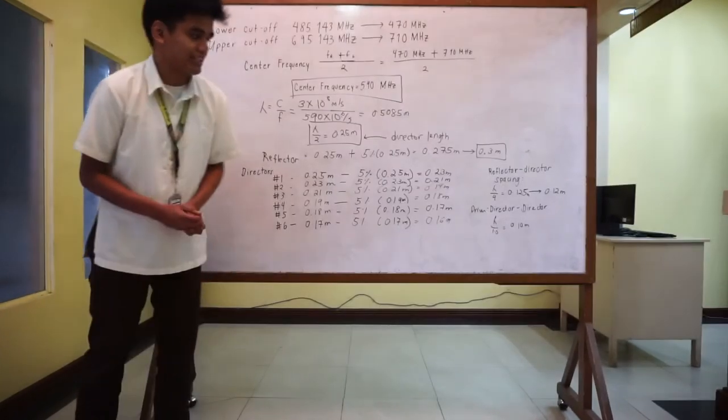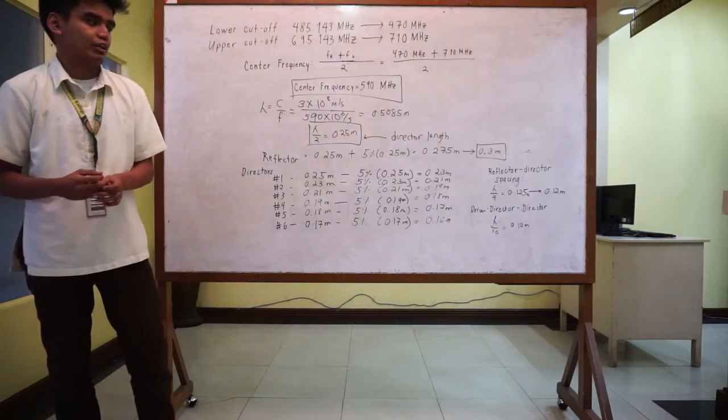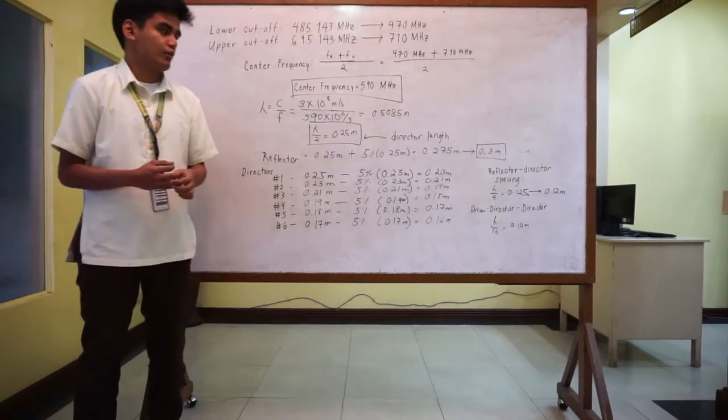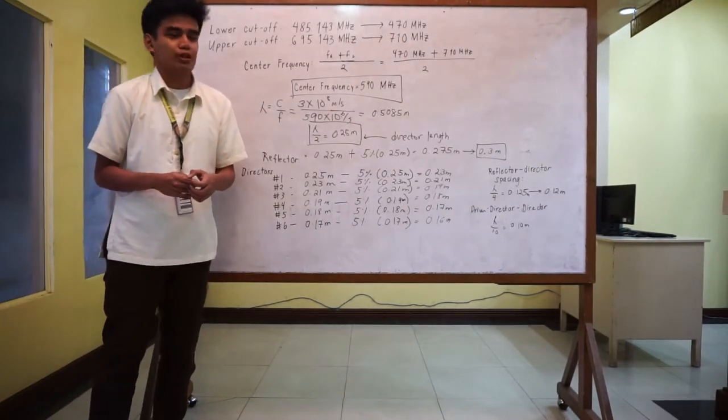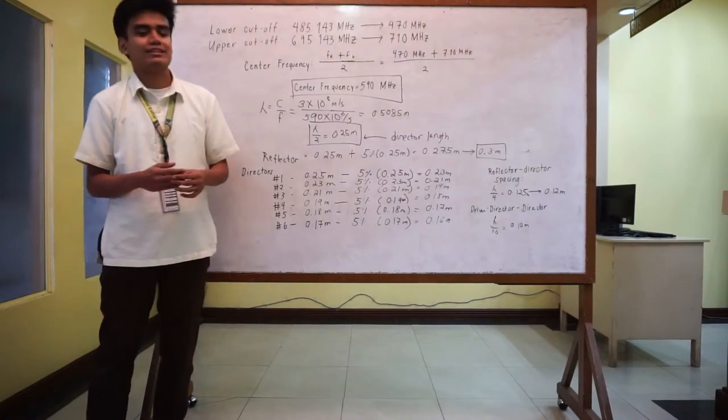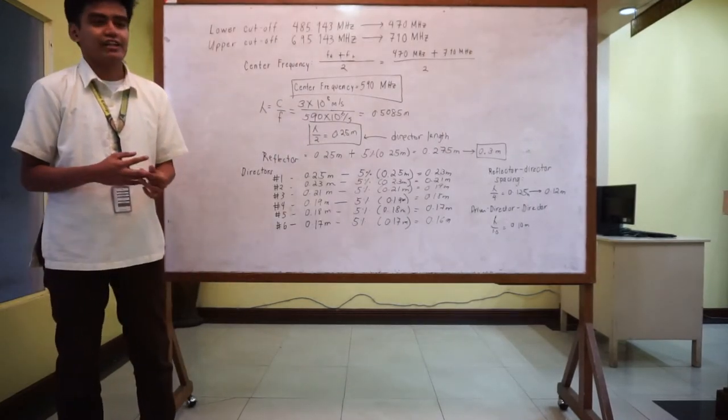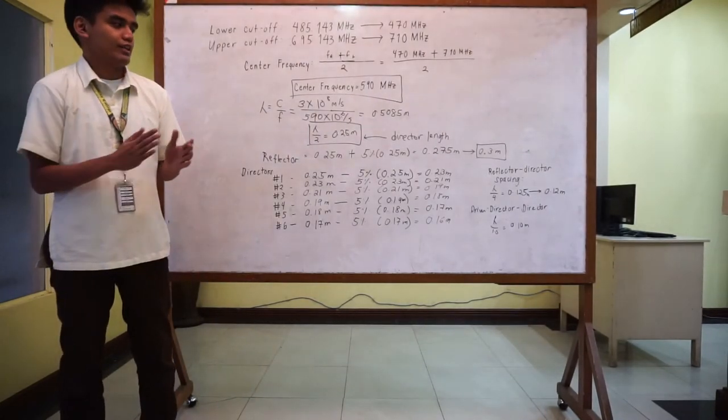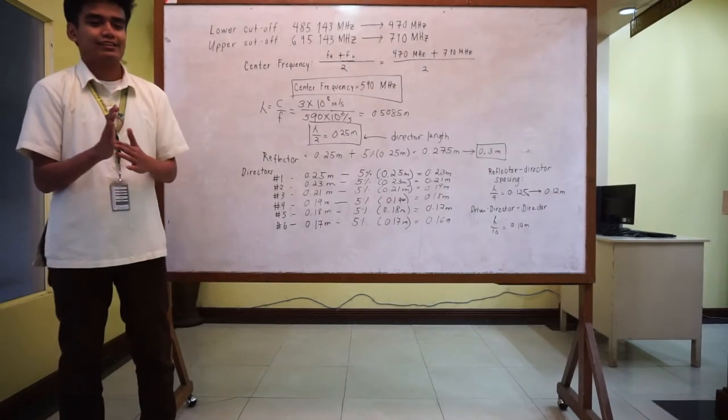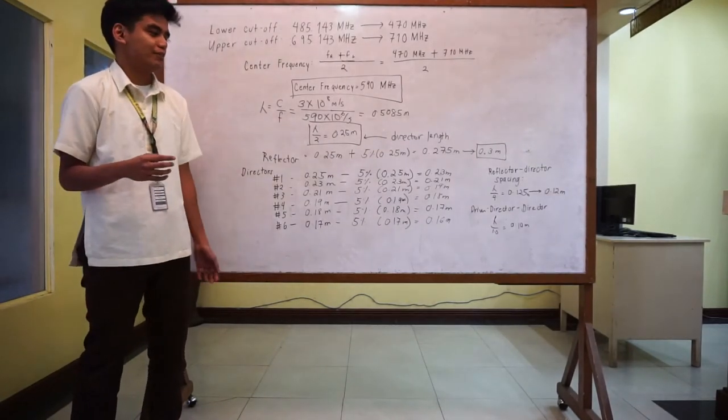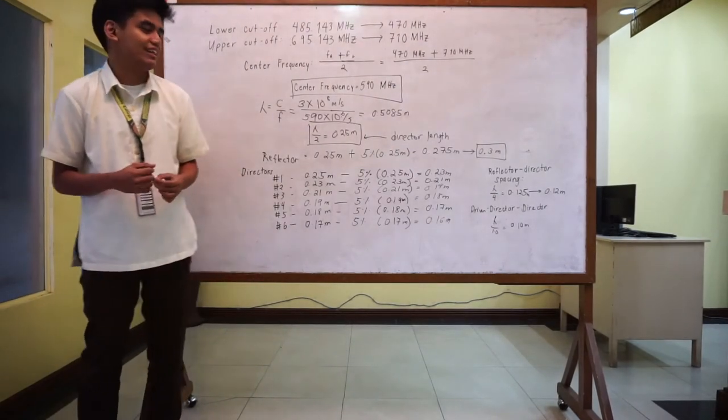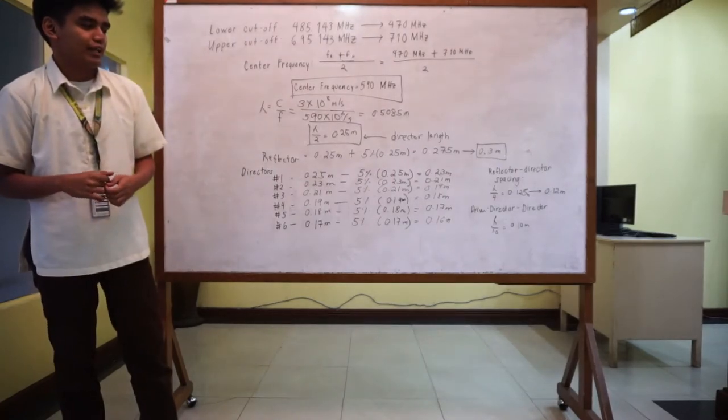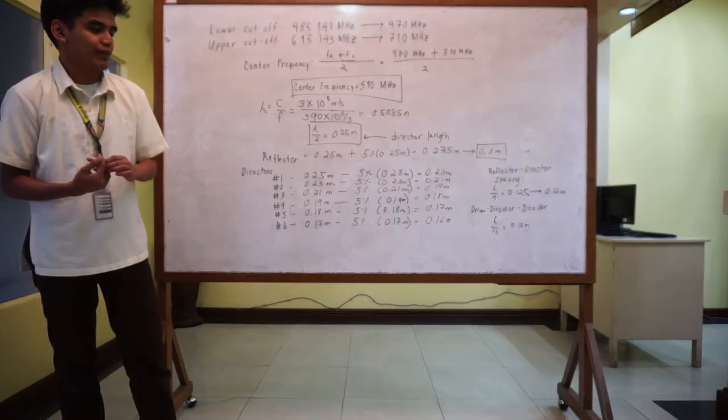So for the reflector to director spacing, we come up with the measurement of lambda over 4. So it is equivalent to 0.125 meters. We rounded it down to 0.12 meters because the shorter the spaces between the reflector to director, the more easier it is for the reflector to reflect the electromagnetic waves from the driven element. And from the driven to the director and director to director spacing, we use the formula lambda over 10, which will be equivalent to 0.10 meters.